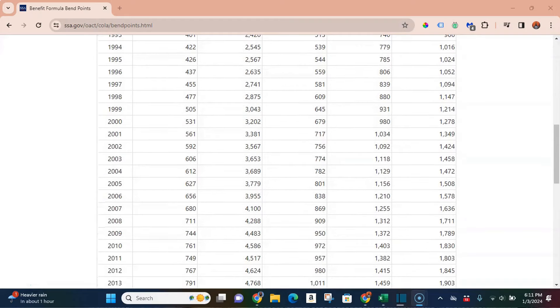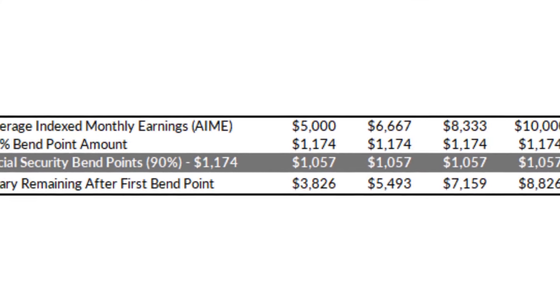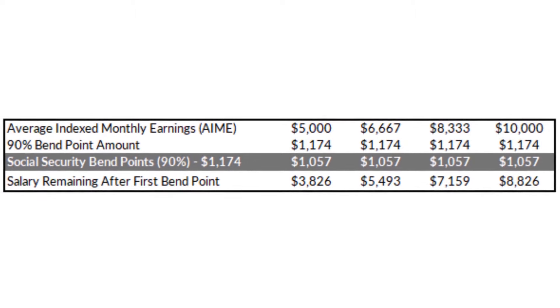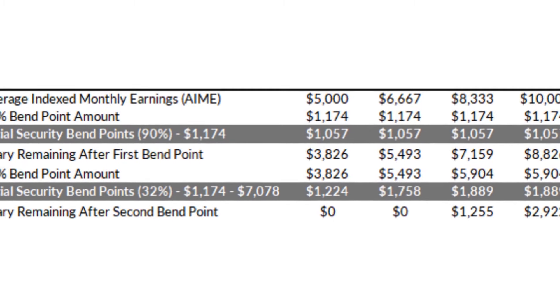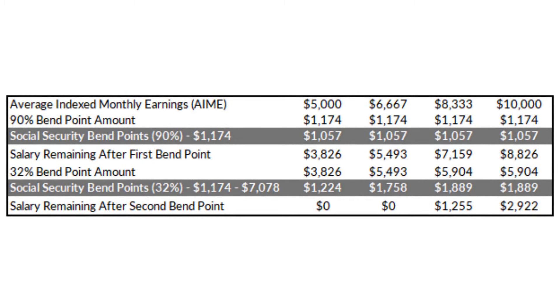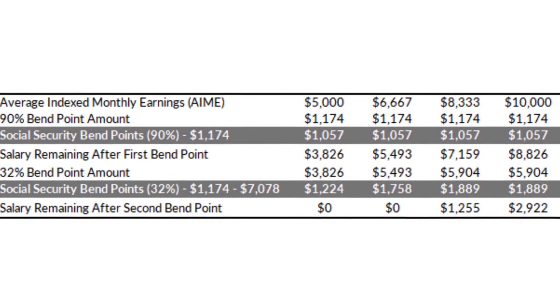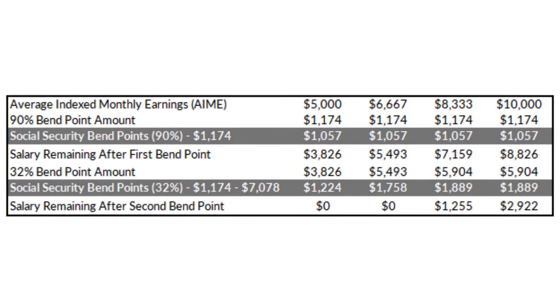The first bend point: on the first $1,174 of your AIME, you get to keep 90%. So 90% of $1,174 is $1,057, and that's true for all four income levels — all four have an AIME higher than $1,174. The second bend point has a cap at $7,078 per month. For the person with a $5,000 AIME — the $60,000 salary — you subtract $1,174 from $5,000, leaving $3,826. You get to keep 32% of that amount, which is $1,224.